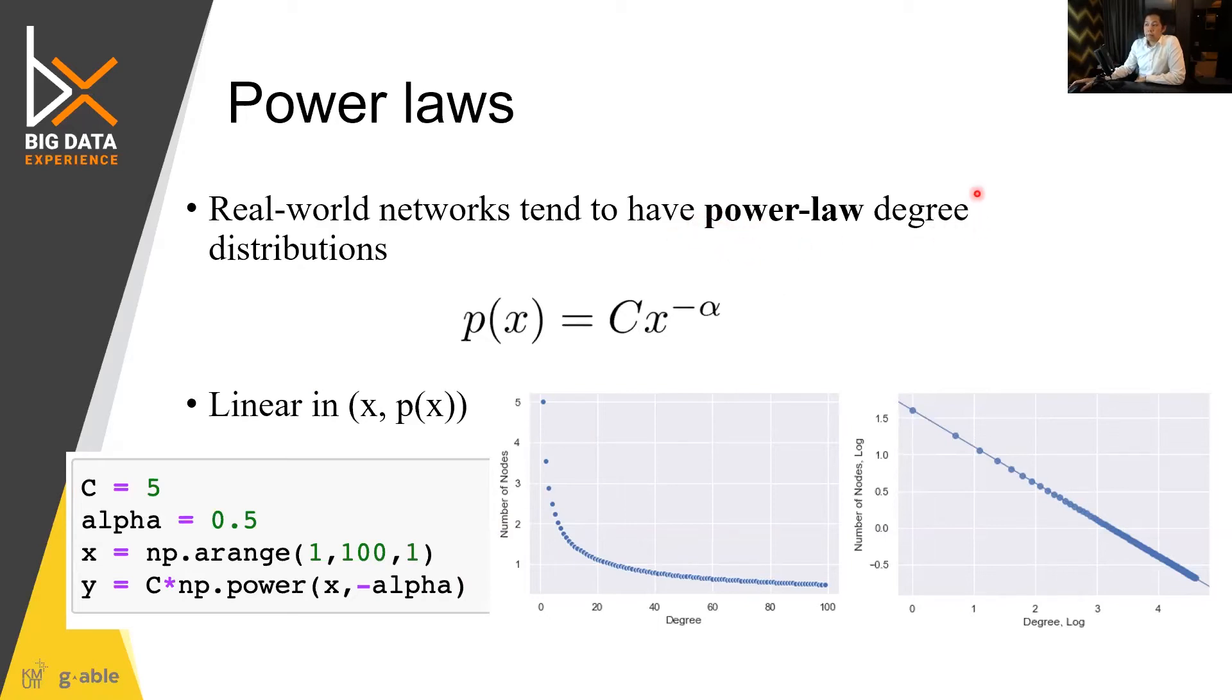So power law distribution can be explained by this equation: the probability of x equals C times x to the negative alpha.